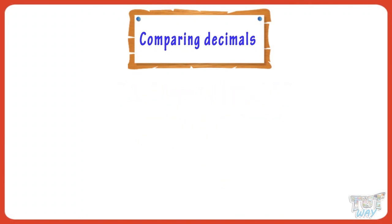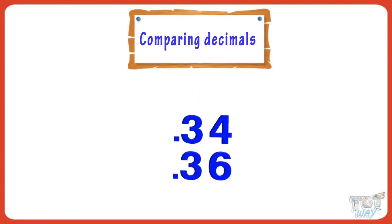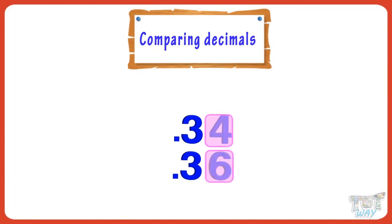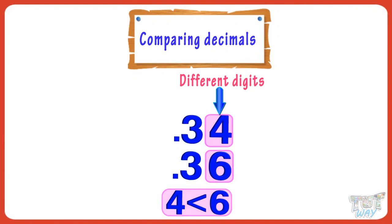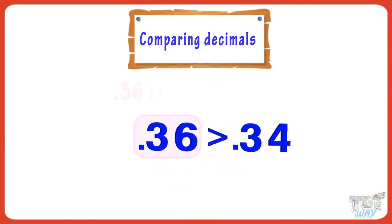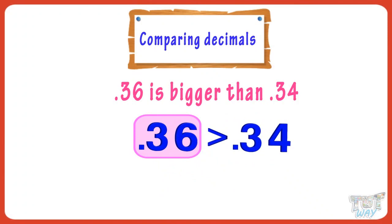Now, let's take another example. Let's compare 0.34 and 0.36. We have to start at the left and look for the first place where the digits are different. Here, the digits at the hundredths place are different. So, comparing four and six, we get 0.36 is bigger than 0.34.